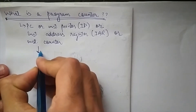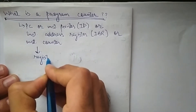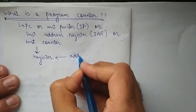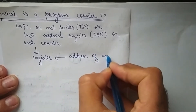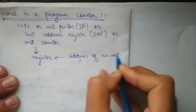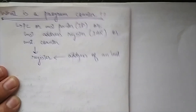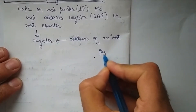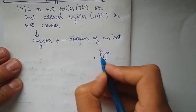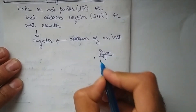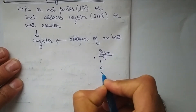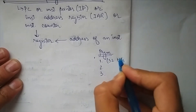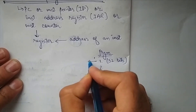A program counter is a special type of register which basically stores the address of the instruction that is to be executed next. For example, let's say we have a program with three instructions: 1, 2, and 3, and each instruction is of 32 bits.